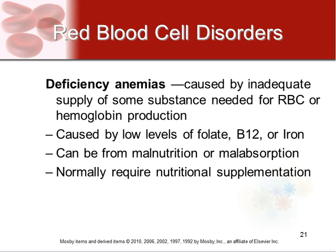Deficiency anemia is caused by an inadequate supply of the substances needed to make red blood cells or hemoglobin. As noted earlier, red blood cells require folate, vitamin B12, and iron. If your diet is low in these, or if there is malabsorption, you'll eventually develop anemia — either not making enough red blood cells or making ones that don't function correctly. Treatment normally requires nutritional supplementation.